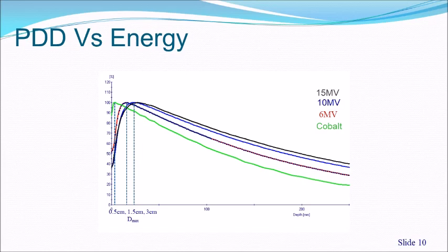PDD also increases with energy. PDD curves for cobalt, 6 MV, 10 MV, and 15 MV show that at 10 cm depth, the PDD is highest for 15 MV and lowest for cobalt. Additionally, as energy increases, the depth of D-max also increases: for cobalt it is 0.5 cm, for 6 MV it is 1.5 cm, for 10 MV approximately 2.5 cm, and for 15 MV about 3 cm.